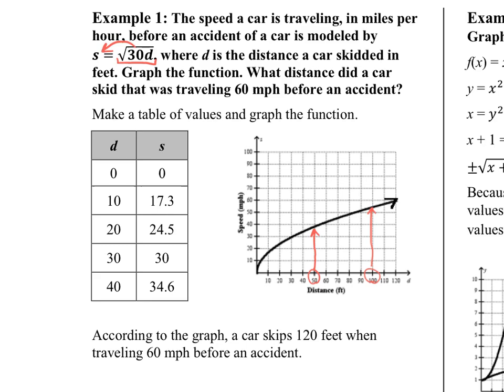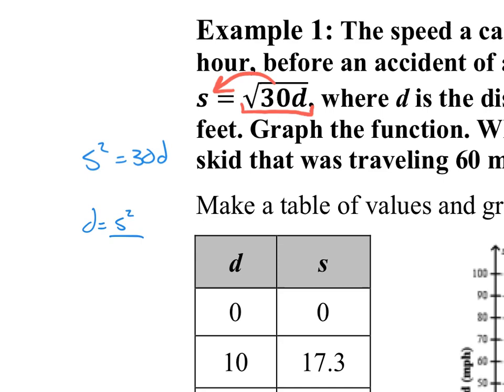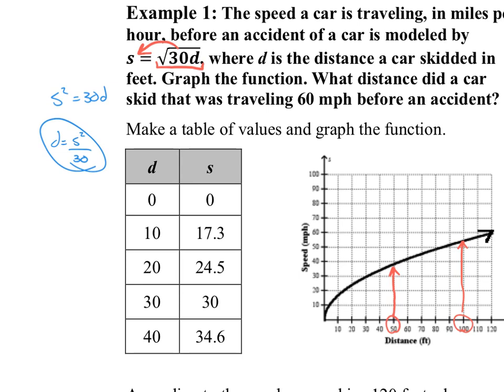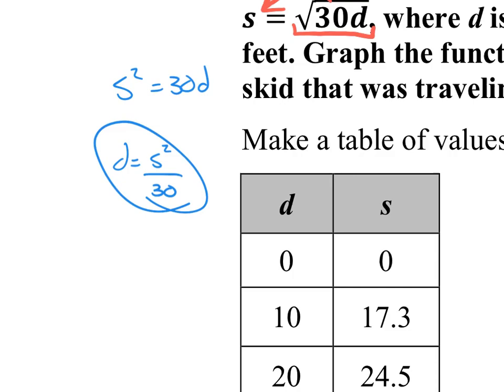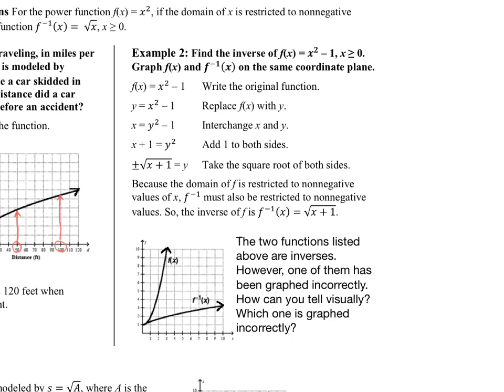If you wanted to find the inverse of this function here, if we find the inverse by squaring both sides and then dividing by 30, you get that the distance would be equal to the speed squared divided by 30. You could graph this function if you wanted to look at this same information from the other perspective. And that's all inverses are, is it switches your x and y axis. But in this particular setup, distance is the x axis and speed is the y axis.